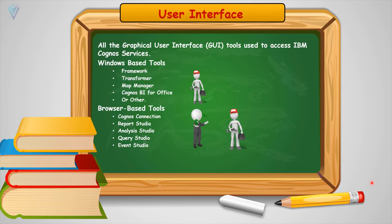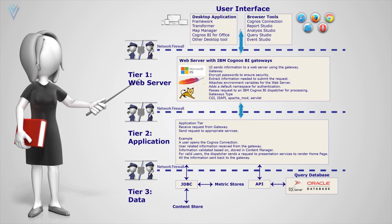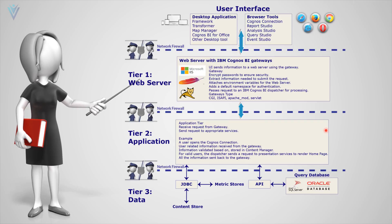In case of Windows-based tools we have an exception. We can open the project available on our local system, but we cannot edit it. We cannot publish the project on IBM Cognos Connection. We can use the project only for documentation purposes. To use Framework Manager we must provide a valid gateway URI and dispatcher URI. If our web server and application server is not running, then on creating a new project you are going to encounter an error message when web server is not working and another error message when your application server is not working.